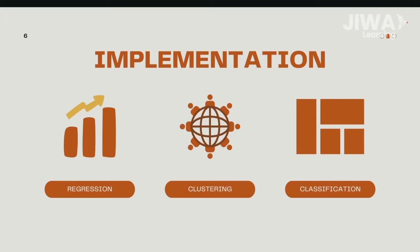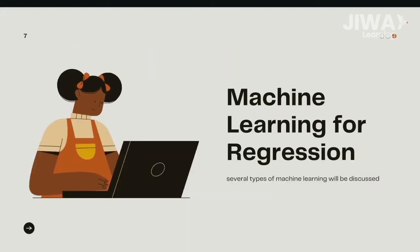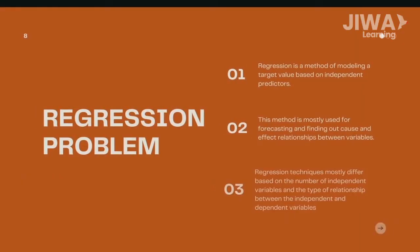Machine learning is widely used to solve problems for the industry such as regression, classification, and clustering. In this video we would discuss regression. Machine learning regression is a method of modeling a target value based on independent predictors. This method is mostly used for forecasting and finding out cause and effect relationships between variables.